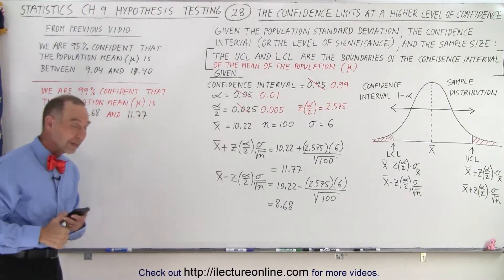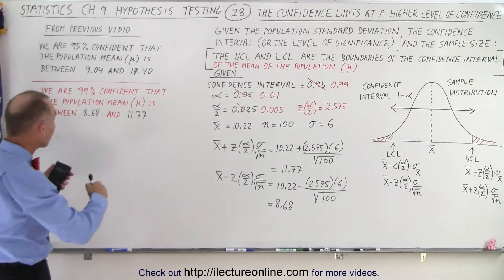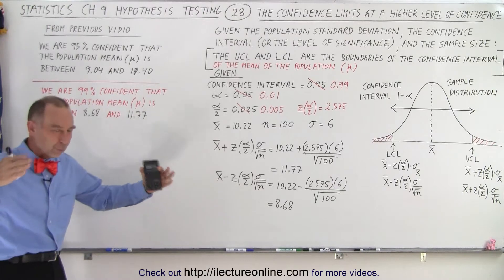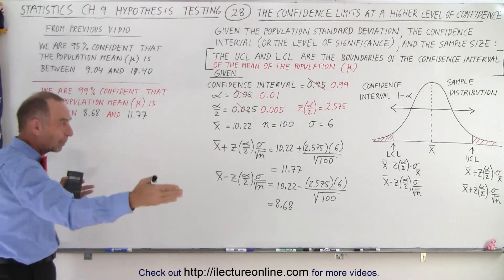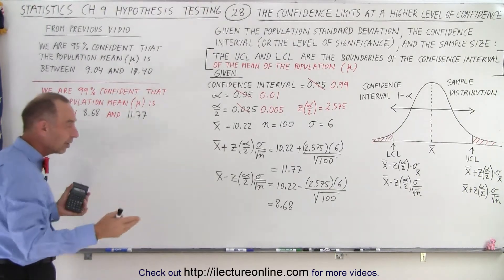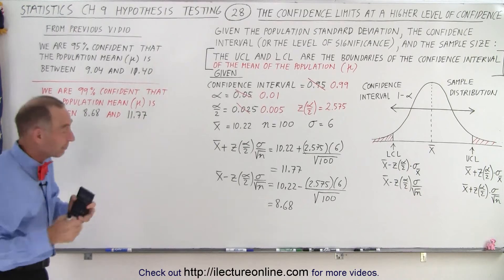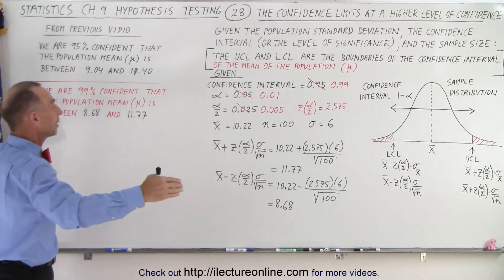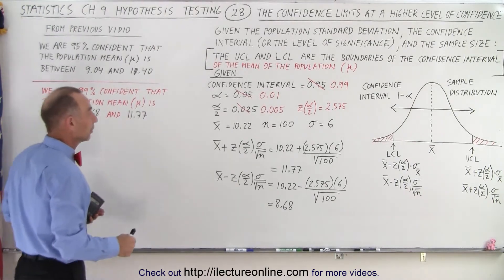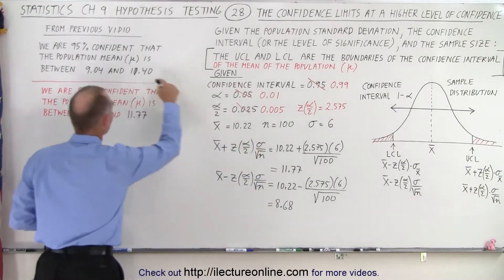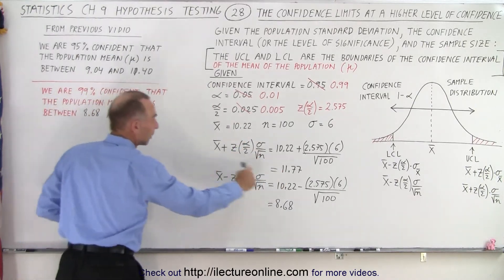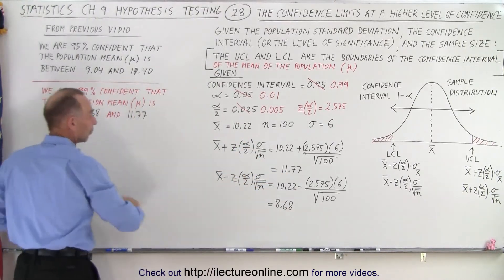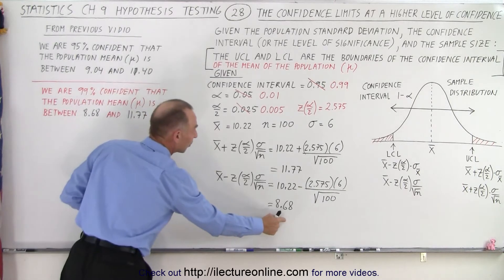So here we can say that if we want to be more confident, we set up a range where we feel the population mean will fall. To be more confident, we simply have to open up the limits — make them a little bigger. Notice the upper limit instead of 10.40 is now 11.77, and instead of 9.04 it became 8.68.